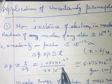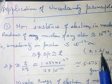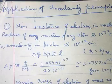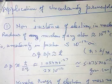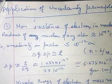delta q into delta p is approximately equal to h cross, where h cross is obviously h upon 2 pi. Delta q is the uncertainty in the position and delta p is the uncertainty in the momentum. So this equation gives delta p is equal to h cross upon delta q.